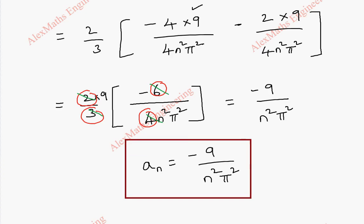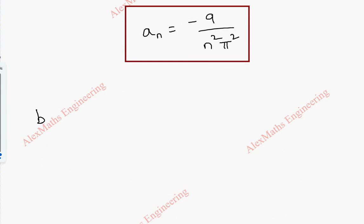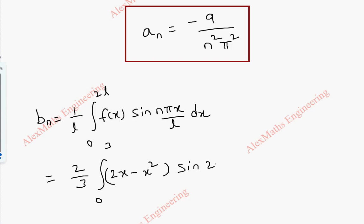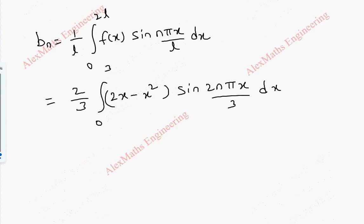Now coming to bn. By formula, bn equals 1 by l, integral 0 to 2l, f of x sin(nπx/l) dx, and l is 3 by 2. So 1 by (3/2) is 2 by 3, integral 0 to 3, f of x is 2x minus x squared, into sin(2nπx/3) dx, after replacing l as 3 by 2. Now we are going to follow Bernoulli's formula. This is our u and sin(2nπx/3) is our v.